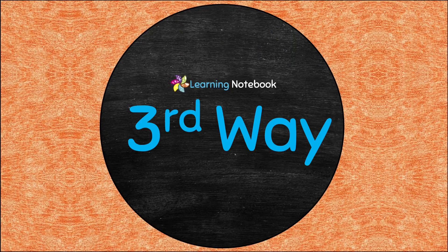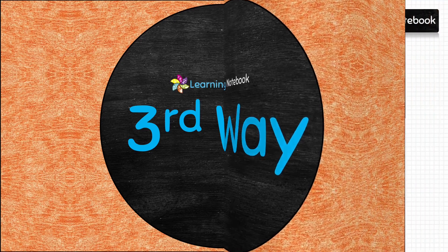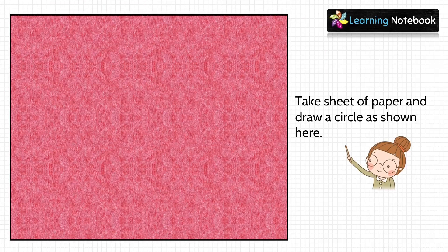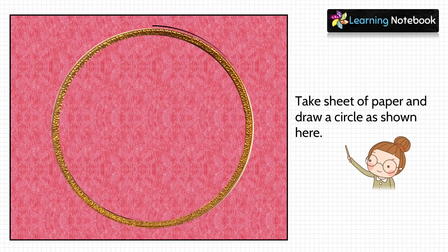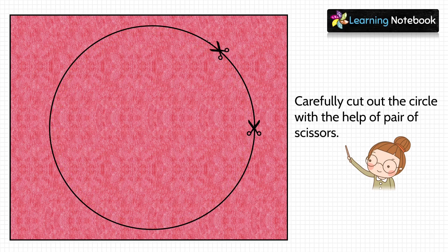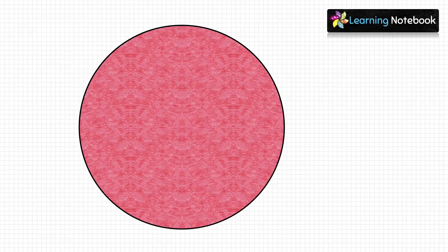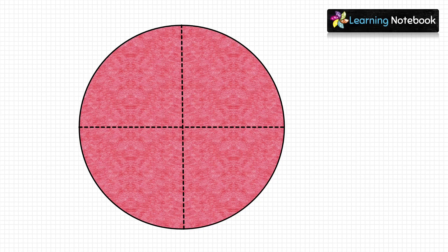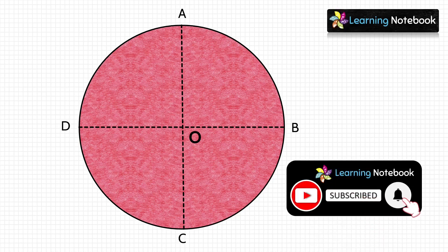Now let's understand the third way to find the center of any given circle. Take a pink sheet of paper, draw a circle using a bangle, and carefully cut it out — here we do not know the center. Fold the circle vertically and then horizontally. The dotted fold lines AC and BD intersect at point O inside the circle, so O is the center. This was the third way to find the center of any given circle.